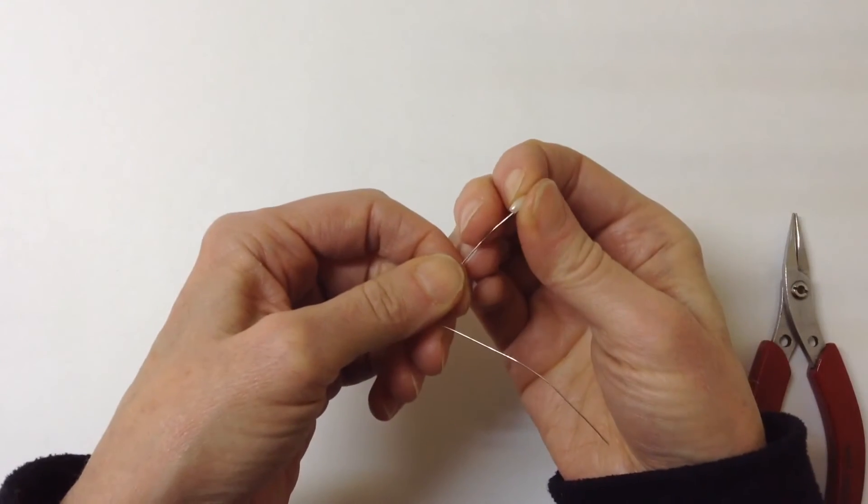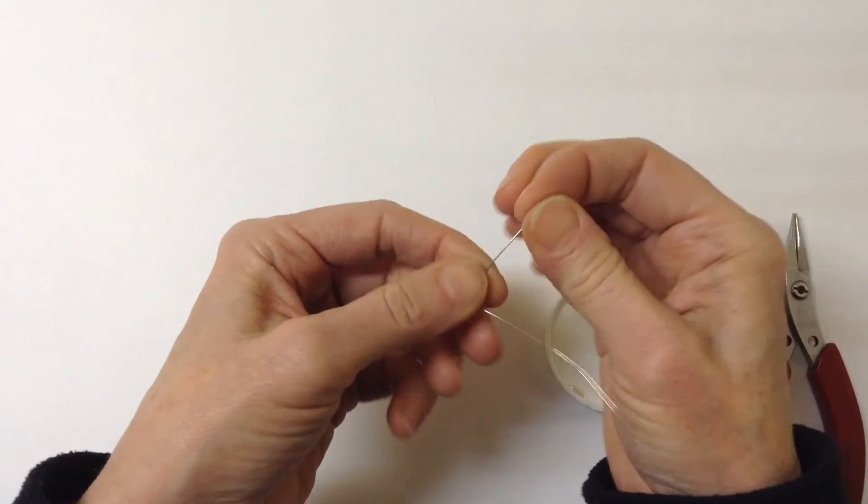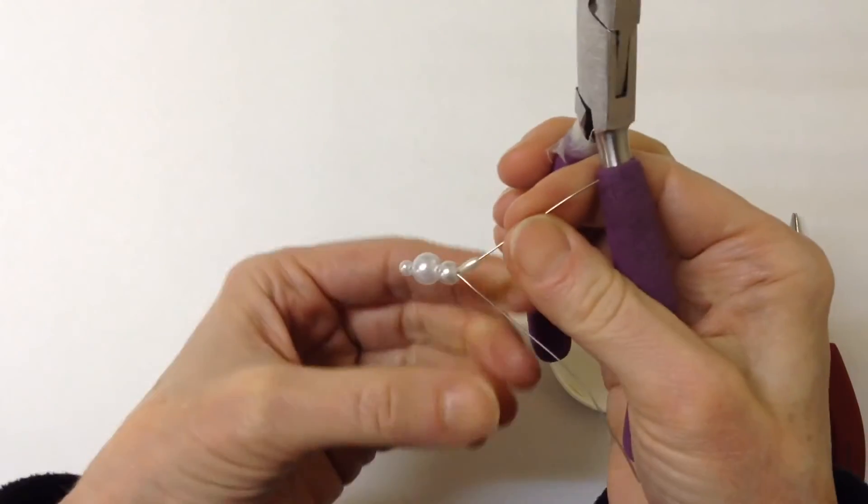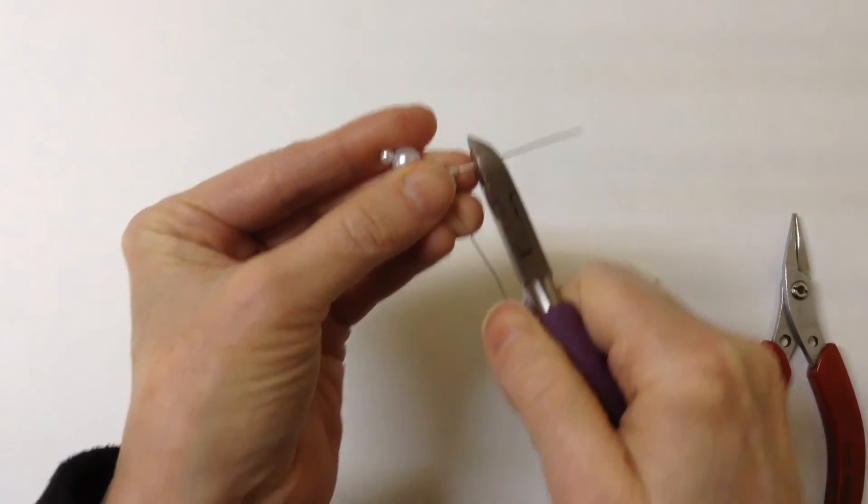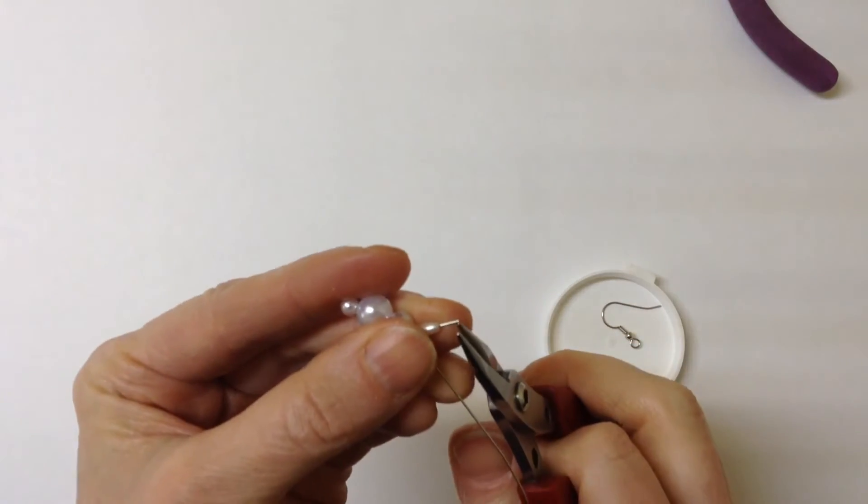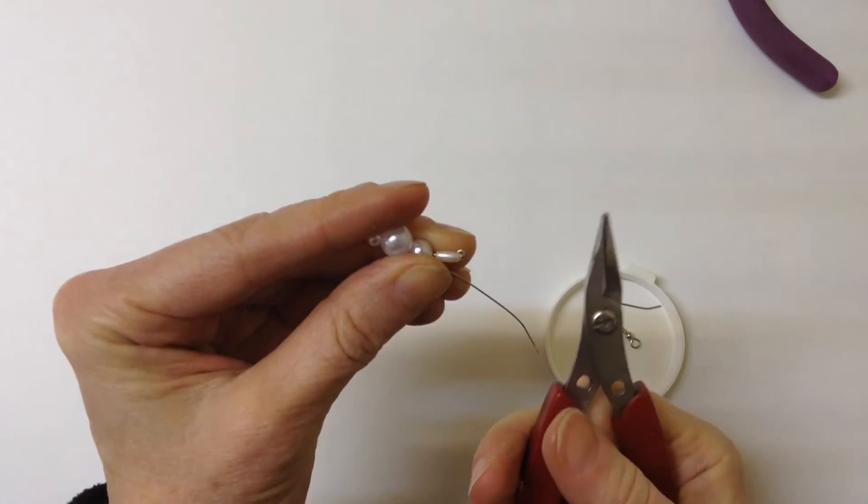Do the shorter wire first and you'll just stick it on there and then just clip the end to about an eighth of an inch and then just do a little loop just to hold the bead on.